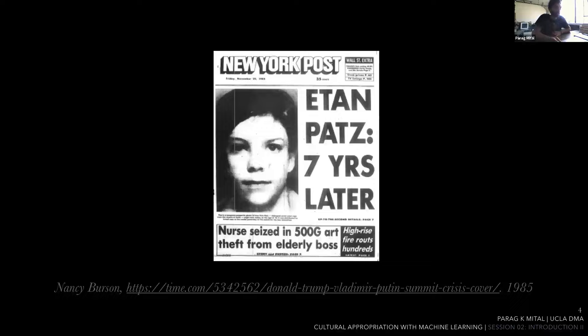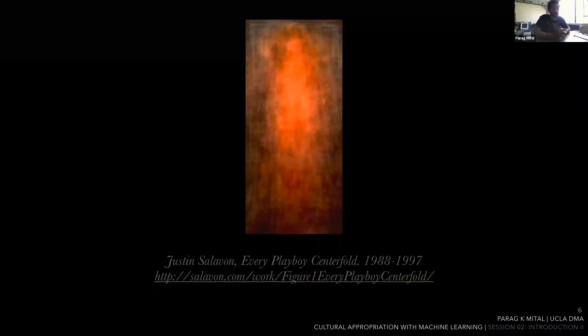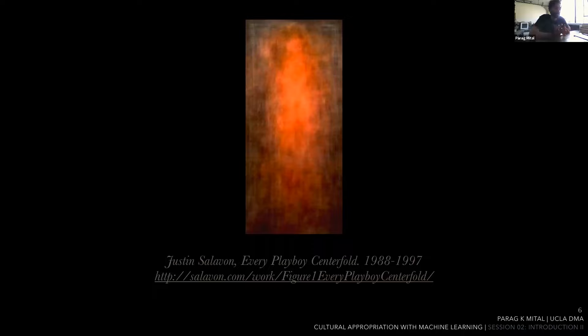Jumping to the 1990s, we have work by Justin Sullivan, who took Playboy centerfolds from 1988 to 1997 and averaged them using the SGI file format. He investigated different averaging techniques and different collections of images — it wasn't really for machine learning, it was an investigation of the collection. It's certainly a question of bias that we're going to think about as we create image data sets.